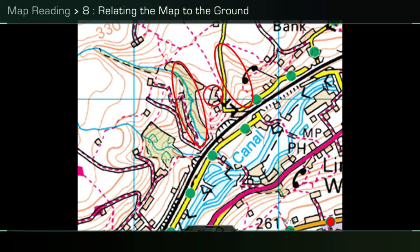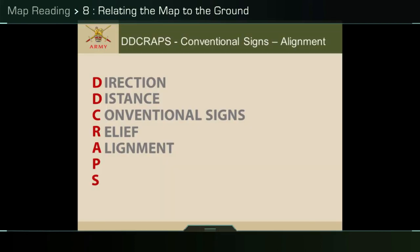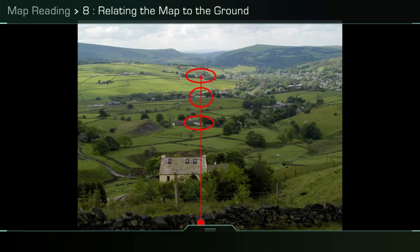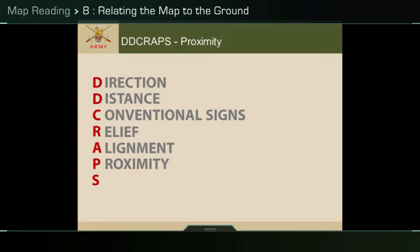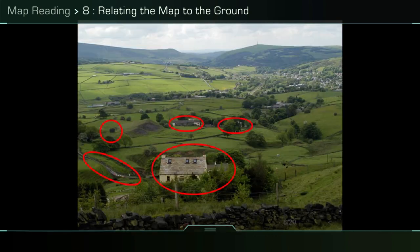Alignment: if three or more features on the ground lay along a straight line in your line of sight, they are in alignment. This can aid in relating the map to the ground and is particularly useful if features lie in a direct line with your own position, as shown in the picture and on the map.